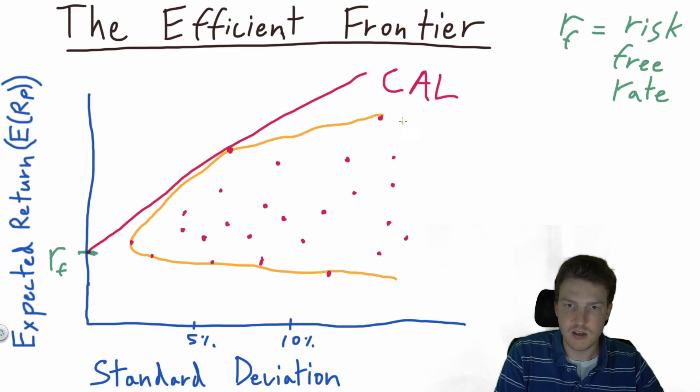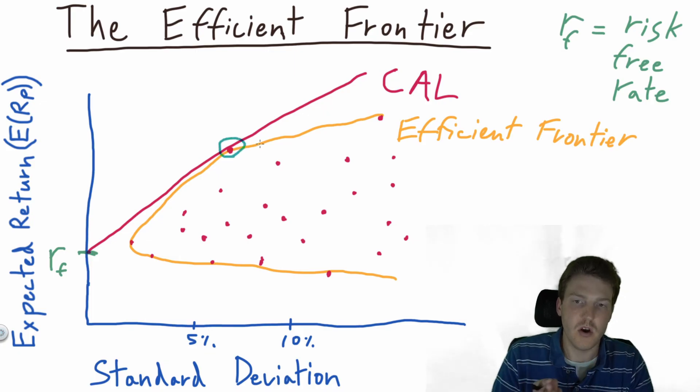And the orange line is the efficient frontier. And we've also determined that based on the Modern Portfolio Theory, this portfolio right here represents our best portfolio based on the efficient frontier.